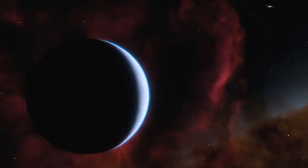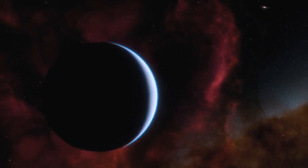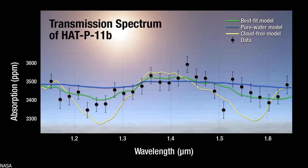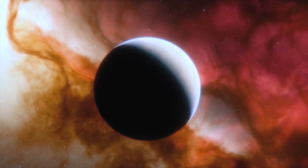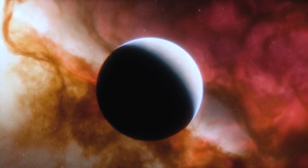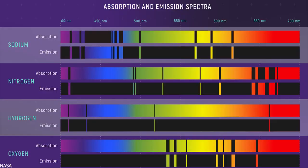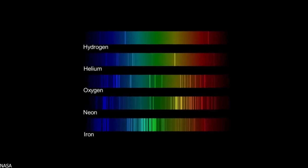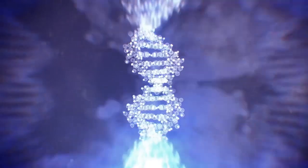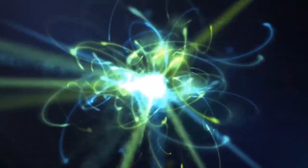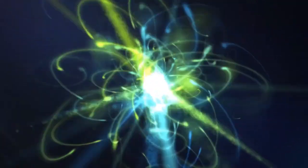A transmission spectrum is created by comparing starlight filtered through a planet's atmosphere as it moves across the star to unfiltered starlight detected when the planetary object is beside the star. Based on the absorption pattern, the locations and heights of peak positions, researchers can detect and measure the abundance of critical gases in a planet's atmosphere. Similar to how people have unique fingerprints and DNA sequences, atoms and molecules have distinct patterns of wavelengths that they absorb.